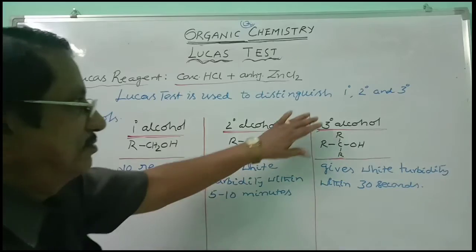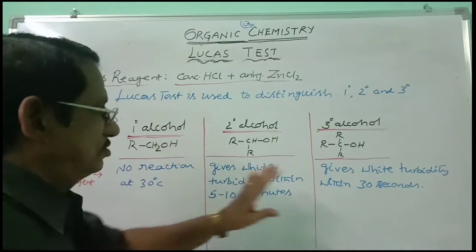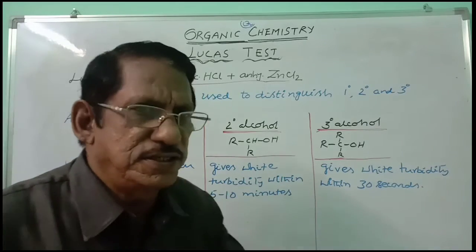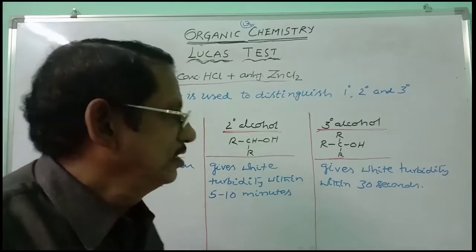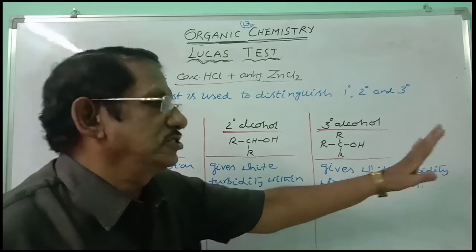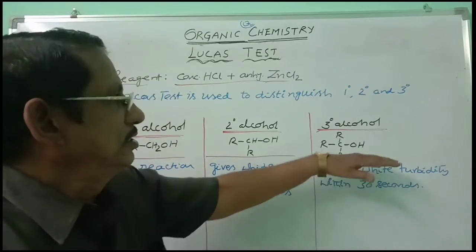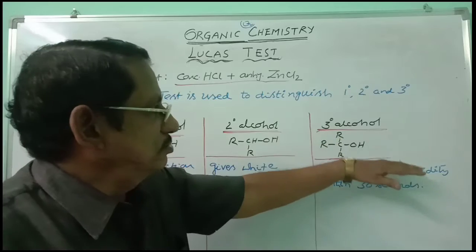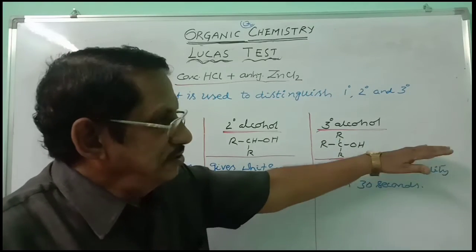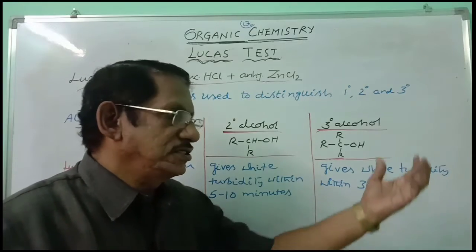In the case of tertiary alcohol, soon after the addition of Lucas reagent, white turbidity is formed — just within 30 seconds. That means almost immediately. So, tertiary alcohol gives white turbidity immediately after the addition of Lucas reagent. Within 30 seconds, the result is obtained.